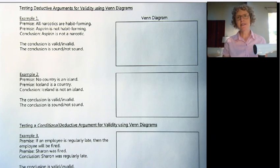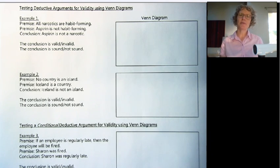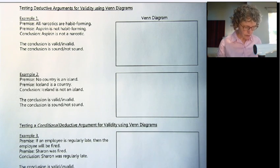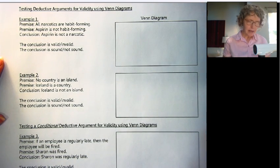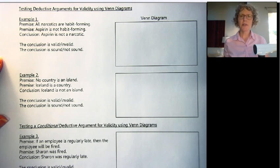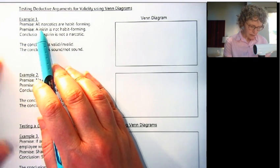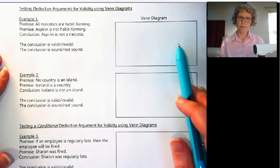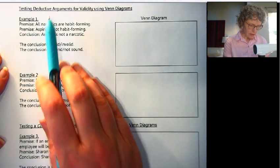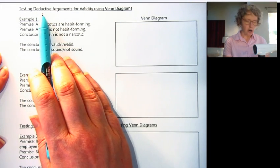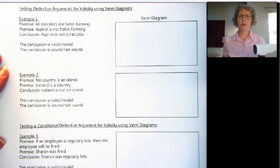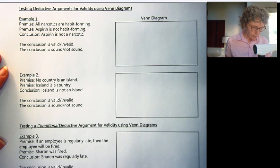This is a video on testing deductive arguments using Venn diagrams. If you need the worksheet, you can go to caroleemath.com. We have three examples here, and we're going to be using concepts from previous videos — representing premises with a Venn diagram and looking at deductive arguments — so feel free to go back and review those if you want.